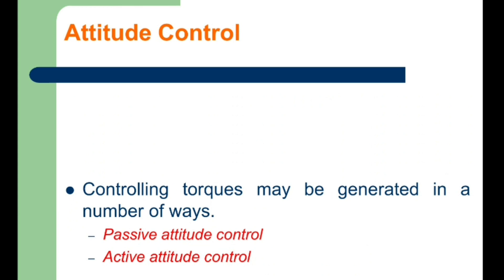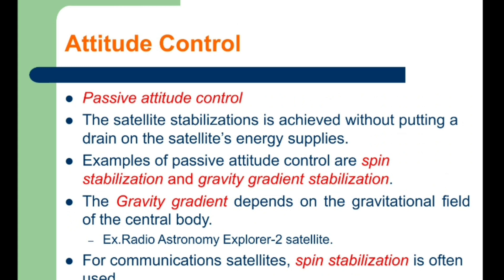The controlling torque may be generated by two ways: passive attitude control and active attitude control methods. In passive attitude control, satellite stabilization can be achieved. Spin stabilization and gravity gradient stabilization are examples of passive attitude control methods.